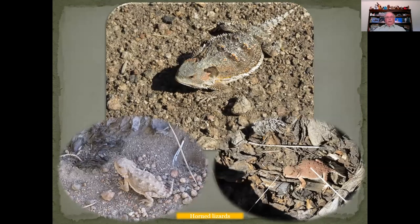Another critter that we have living in the area that you'll see throughout the year, many times along the trail, is the horned lizard. You can see from these three different lizards they have different colorations — they kind of blend in with their environment. Some of them are just no bigger than your thumbnail; others can get up to six or seven inches.